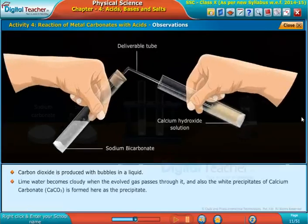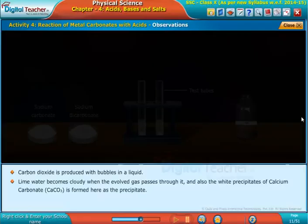The lime water becomes cloudy when the evolved gas passes through it, and white precipitates of calcium carbonate (CaCO3) form as the precipitate.